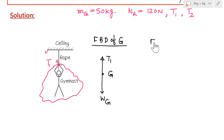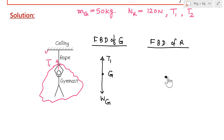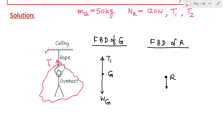Similarly, I can draw the free body diagram for the rope, denoting the rope by a point. The gymnast is trying to pull the rope in the downward direction, while the rope is trying to pull the gymnast in the upward direction — these two are an action-reaction pair. By Newton's third law, these must be equal, so this force on the rope is also equal to T1.